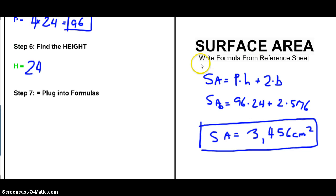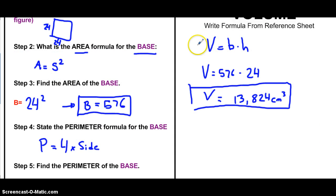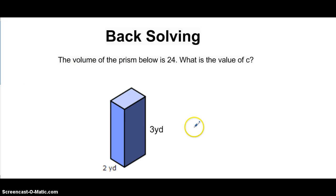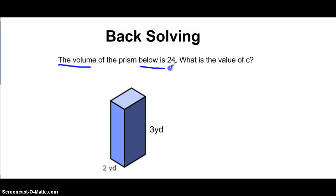Remember, make sure you're following all these steps. If you're not, you'll probably get it wrong. Write the formula, plug everything in, put it into the calculator. Now, just when you think we're done, we're going to try one more problem. This one is called a back-solving problem because they tell you the volume in the question. They tell you the volume of this prism is 24, and we want to find the value of C.